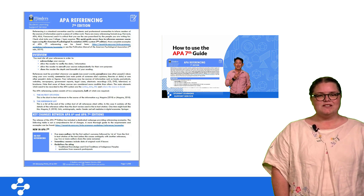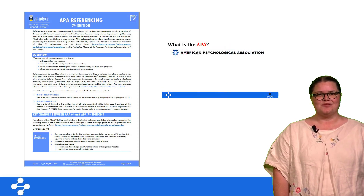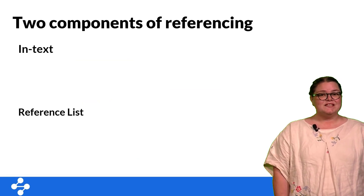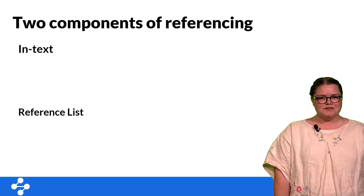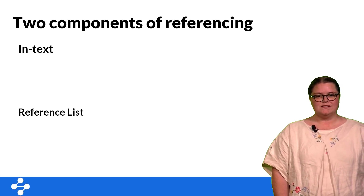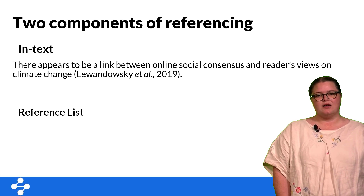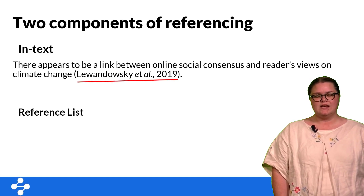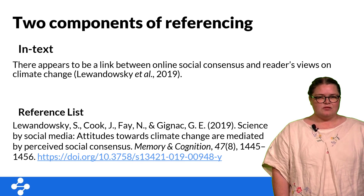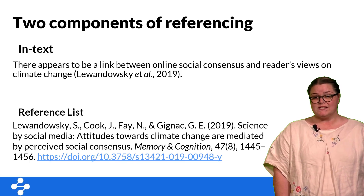So let's have a look at the breakdown of components within referencing and we'll have a look at some different referencing styles. The first thing to recognize is that while there are many different referencing styles, they will require two components: an in-text citation, which is used as a quick marker or indication of the source used, and a separate reference list where the detailed information is presented in order to allow the reader to go and find that source for themselves.